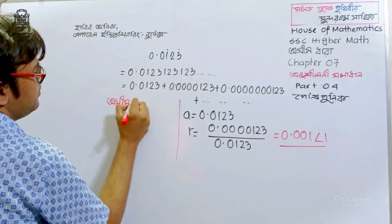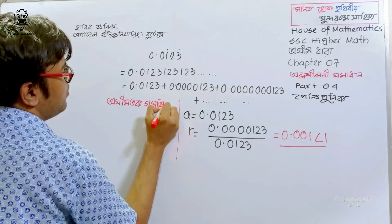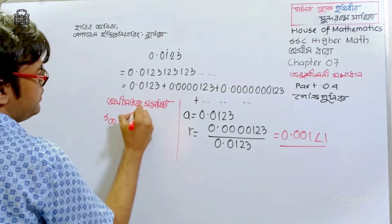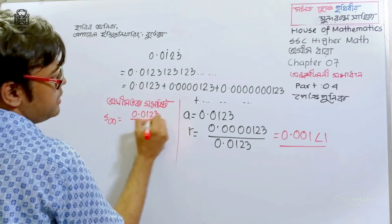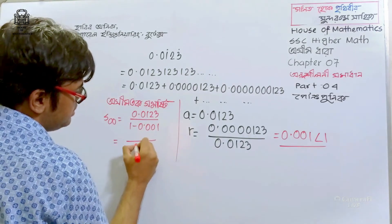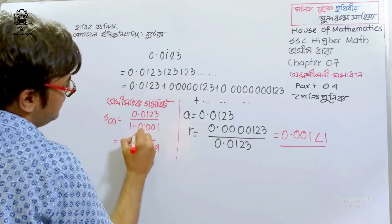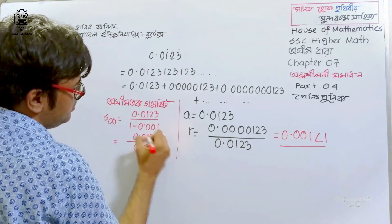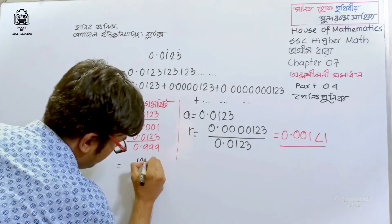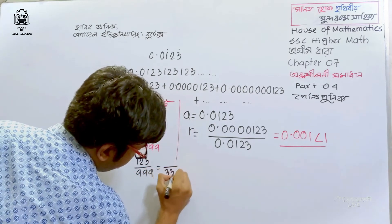So this is what we have to write: 1.0123 divided by 1 minus 0.001. That means 0.004099. All right. So this is what we have to write: 1.0123 divided by 0.0123.